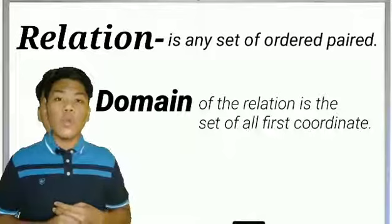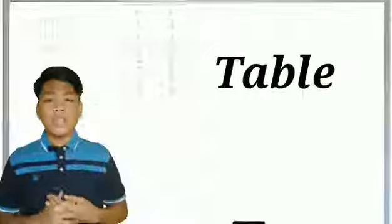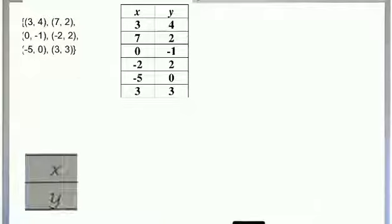A relation can also be presented using four ways aside from using ordered pairs. The first way is the table. The table describes the value of y as the value of x changes. We can use the table horizontally and also vertically.